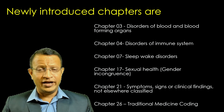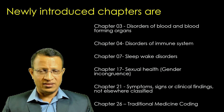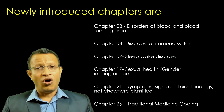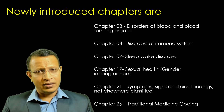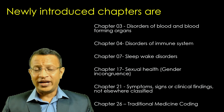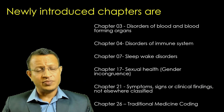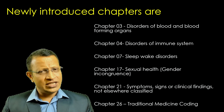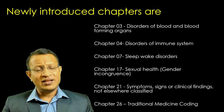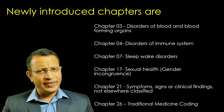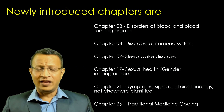Let us look into the new chapters introduced into ICD-11. Chapter 3 — disorders of blood and blood-forming organs — has been added as a separate chapter. Chapter 4 covers disorders of the immune system. Chapter 7 covers sleep-wake disorders, which was earlier under psychiatric ICD-10 but now has a separate chapter. Chapter 17 — sexual health — has been brought in, and gender incongruence, basically transgender, has been given a separate chapter, moved out of mental disorders. Chapter 21 covers symptoms, signs or clinical findings not elsewhere classified. Chapter 26 covers traditional medicine coding.